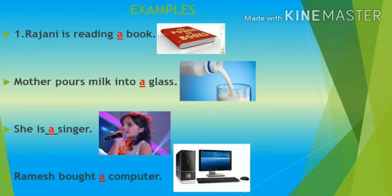Here in these examples, we see that the nouns book, glass, singer, and computer are singular nouns and begin with a consonant sound. So we use A before these nouns.